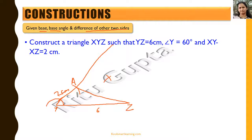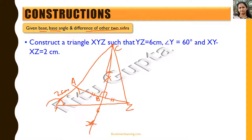We draw the perpendicular bisector of AZ — similar to the previous construction — and extend it to meet the extended ray YA at point C. We join C and Z. Taking the midpoint as B, we know AB equals BZ because it's the perpendicular bisector, angle ABC equals angle CBZ both being 90 degrees, and CB is the common side. So triangle ABC is congruent to triangle ZBC.